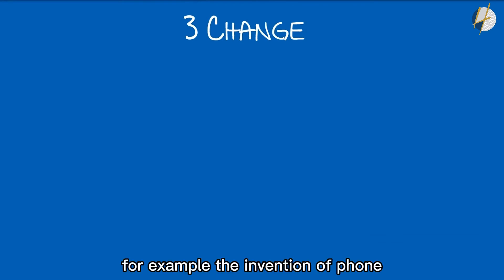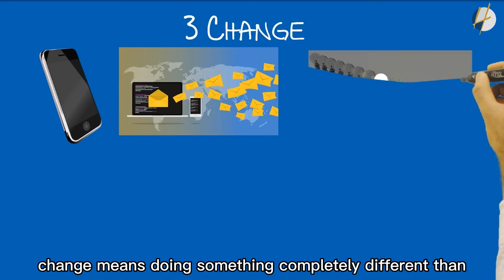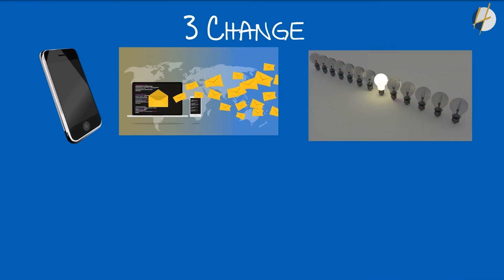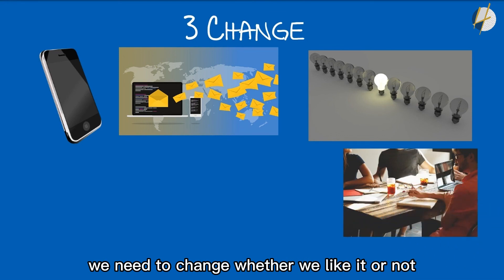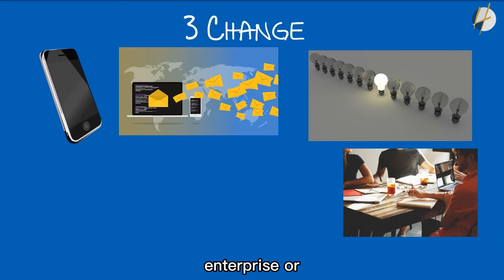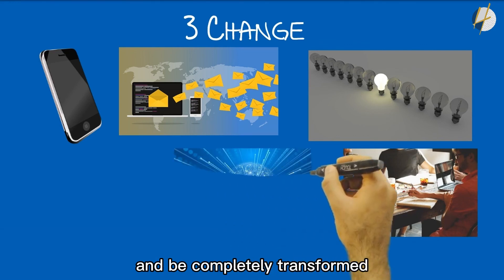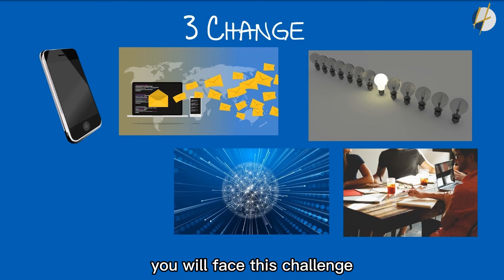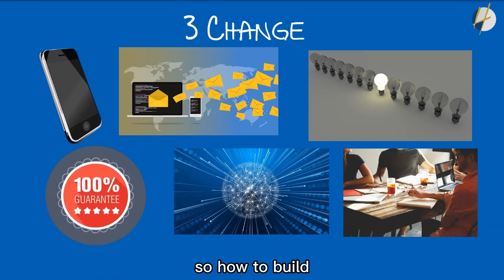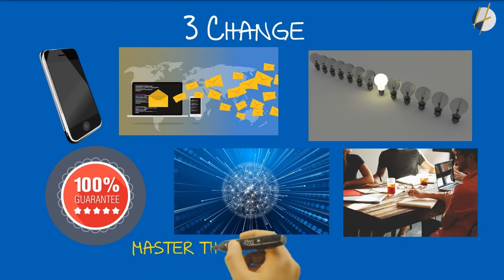The third method: change. When current efforts don't help, we must learn to change. For example, the invention of the telephone was a revolution in the communication industry, with letters and telegrams as the mainstay before it. Change means doing something completely different from others. We must change before the trend changes. No matter what field we are in, every profession, career, and organization will inevitably undergo dramatic, qualitative changes and be completely transformed in the next few years. No job is future-proof. So how do we build foresight and keep providing extra value? The answer is: master the certainty, insights, and change.